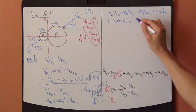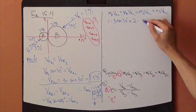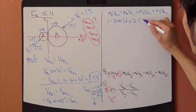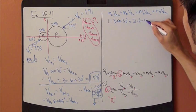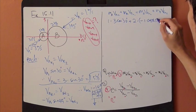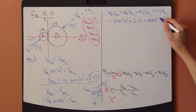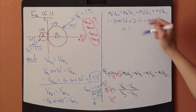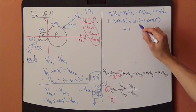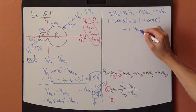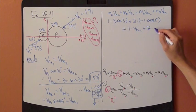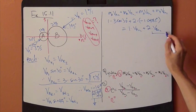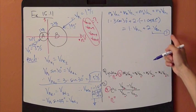plus mass of B is 2 kilograms, and VBN1, which is negative VB, which is 1 meter per second, cos 45 degrees — same thing — equals MA again 1 kilogram, VAN2, that's the unknown, plus MB 2 kilograms, and VBN2. So here now you have 2 unknowns, so let's keep it as equation 1.